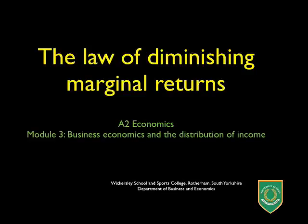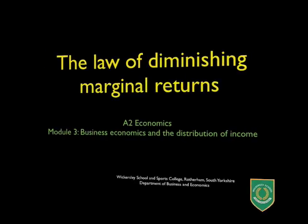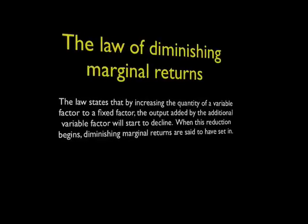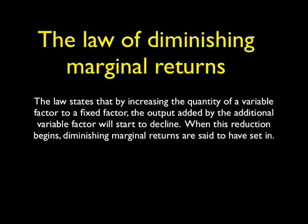A2 Economics, Module 3: The Law of Diminishing Marginal Returns. This law states that by adding increasing quantities of a variable factor to a fixed factor input, the output added by the additional variable factor will ultimately decline. At this point, diminishing marginal returns are said to have set in.